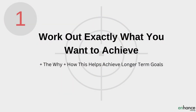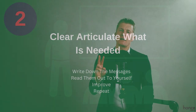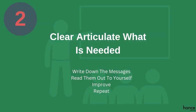Here are six steps to set the scene for creating accountability at work. Firstly, work out exactly what you want to achieve and why and how this helps achieve longer term goals. The more time you spend on this step, the less you spend on the rest. Secondly, clearly articulate what is needed in more than one way. Write down the messages, read them out to yourself, improve and then repeat the process.